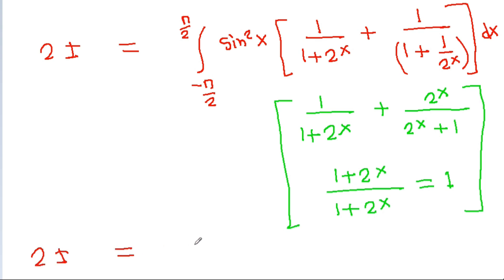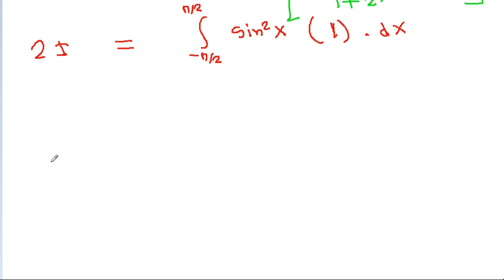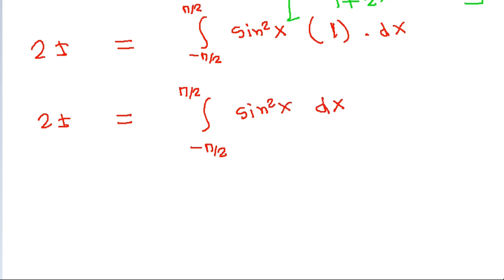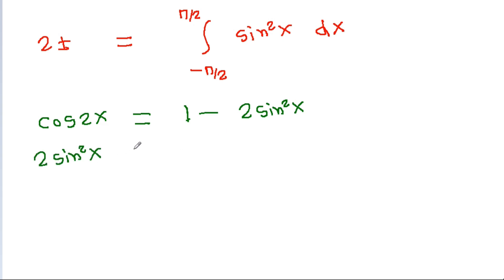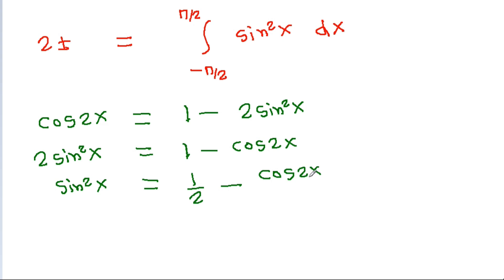So 2i equals the integral from minus pi by 2 to pi by 2 of sine square x dx. We know that cos 2x equals 1 minus 2 sine square x, so 2 sine square x equals 1 minus cos 2x, or sine square x equals 1 by 2 minus cos 2x by 2.